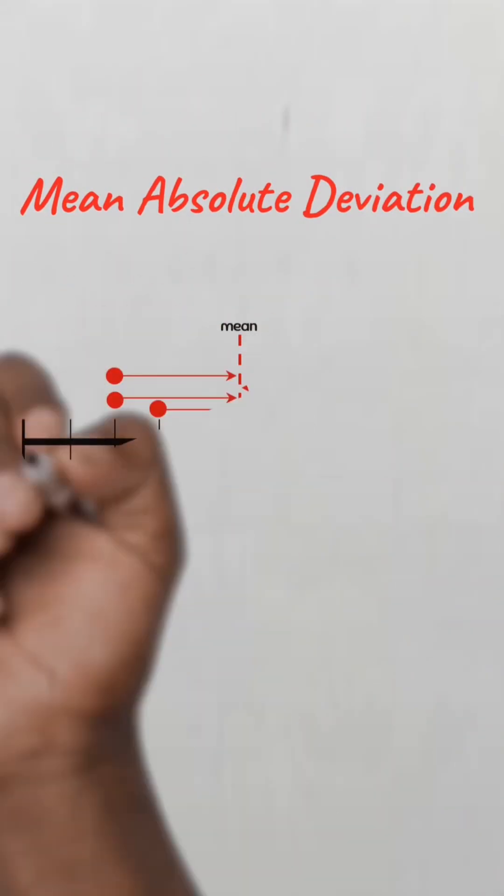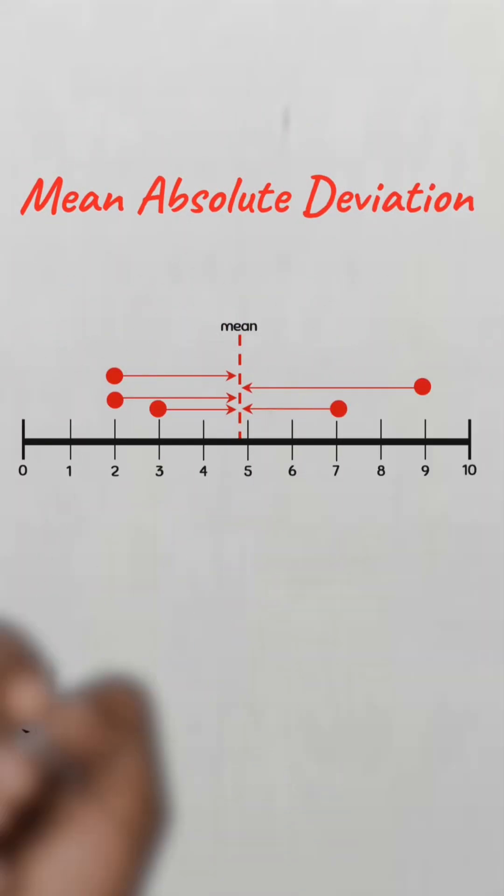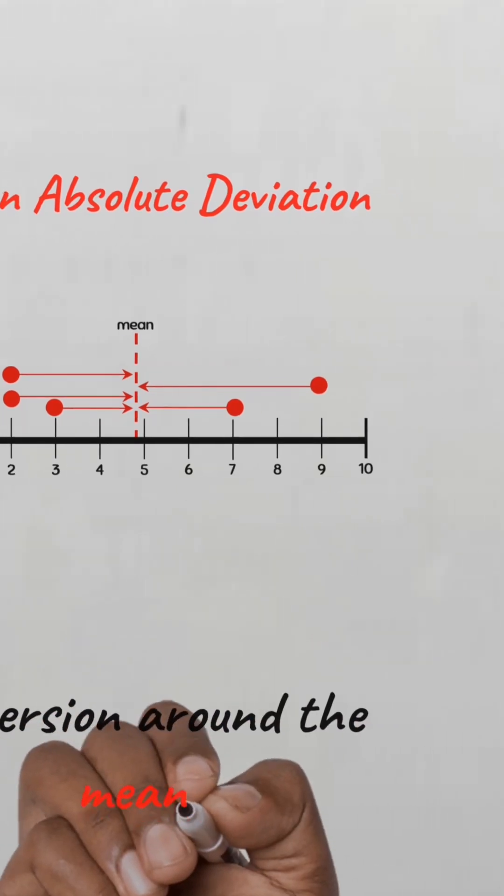The mean absolute deviation is a statistical measure that quantifies the variability or dispersion of a set of data around its mean.